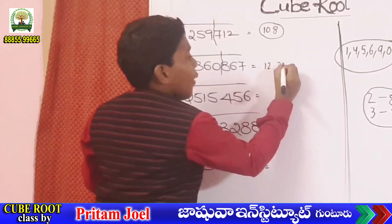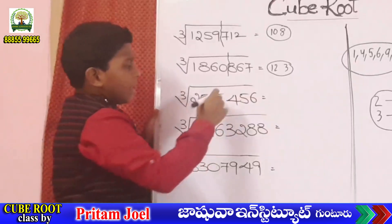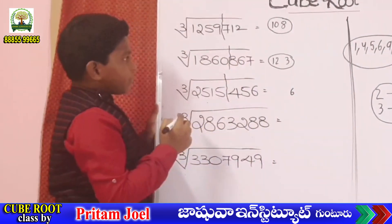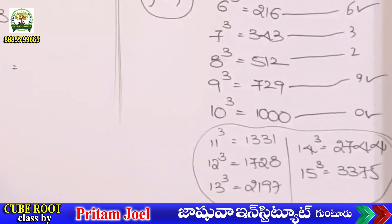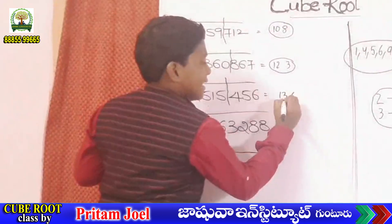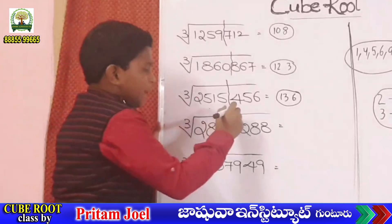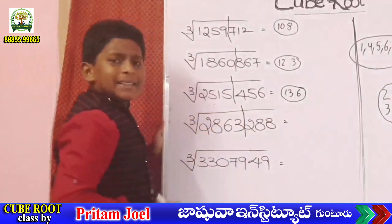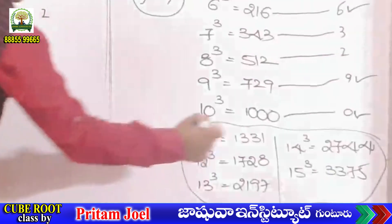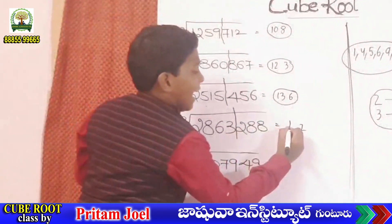Next, cube root of 2515456: remove last 3 digits. The unit place is 6, so the answer unit place is also 6. Remaining 2515 is bigger than 2197, means 13 cube. Cube root cancels, so 13. This answer is 136. Next, cube root of 2863288: remove last 3 digits. The unit place is 8, so the answer unit place is 2. Remaining 2863 is bigger than 2744, means 14 cube. Cube root cancels, so 14. This answer is 142.